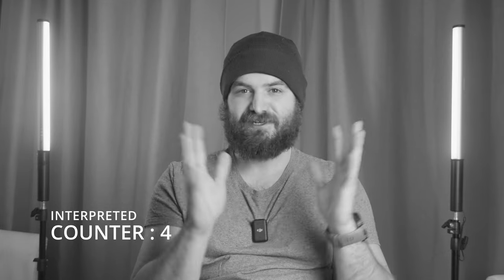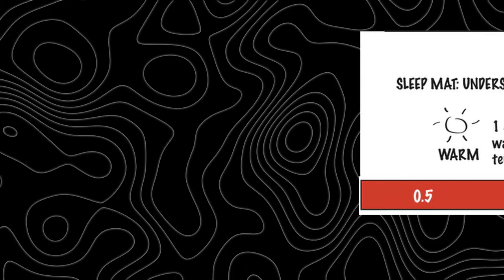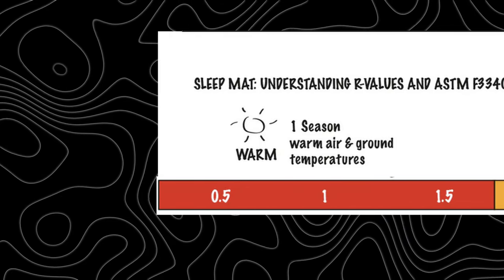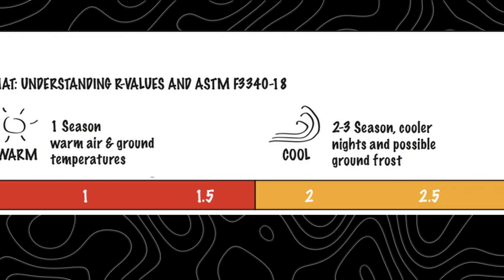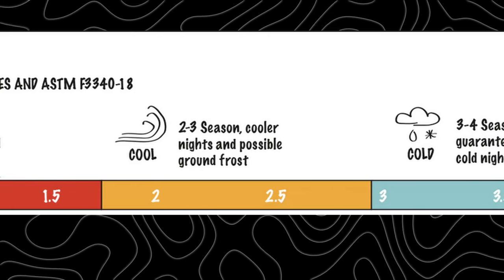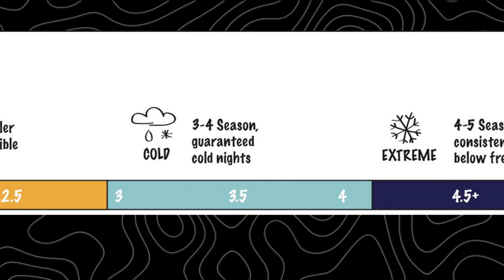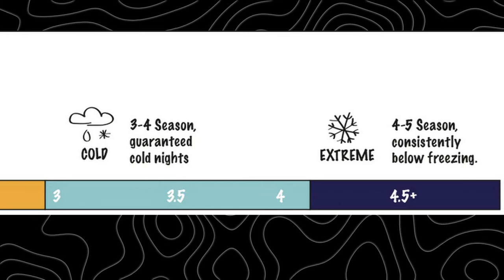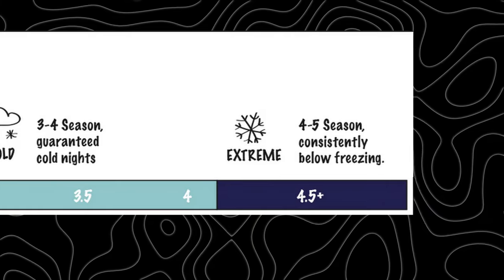In this case, ratings will be interpreted differently for you. From 0 to 1.5 will be one season, from 2.0 to 2.9 will be two seasons, from 3 to 4 will be three seasons, and from 4.5 to 5 and even higher will be four-season sleeping pads.